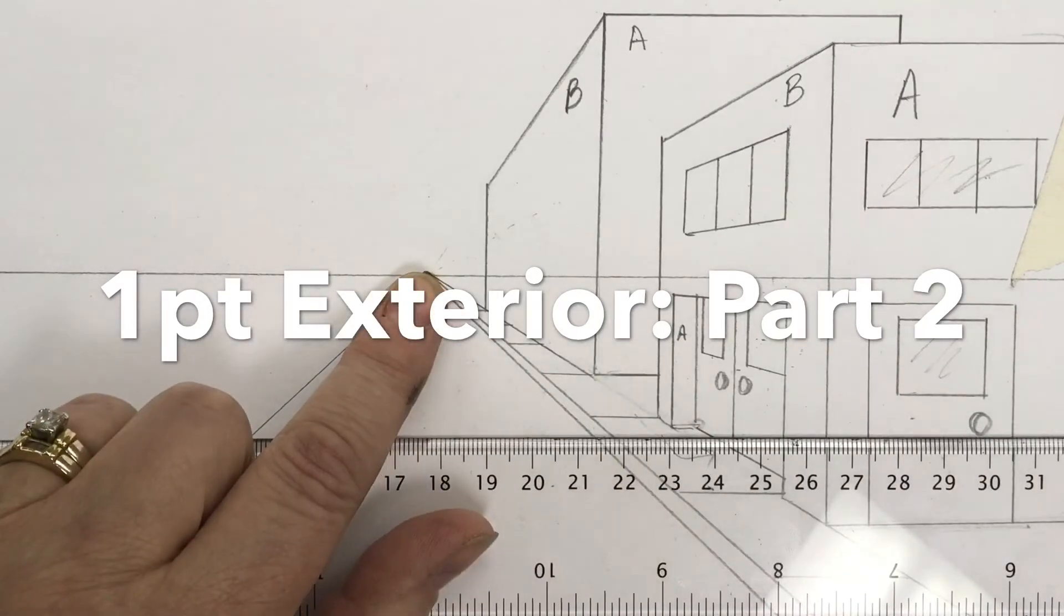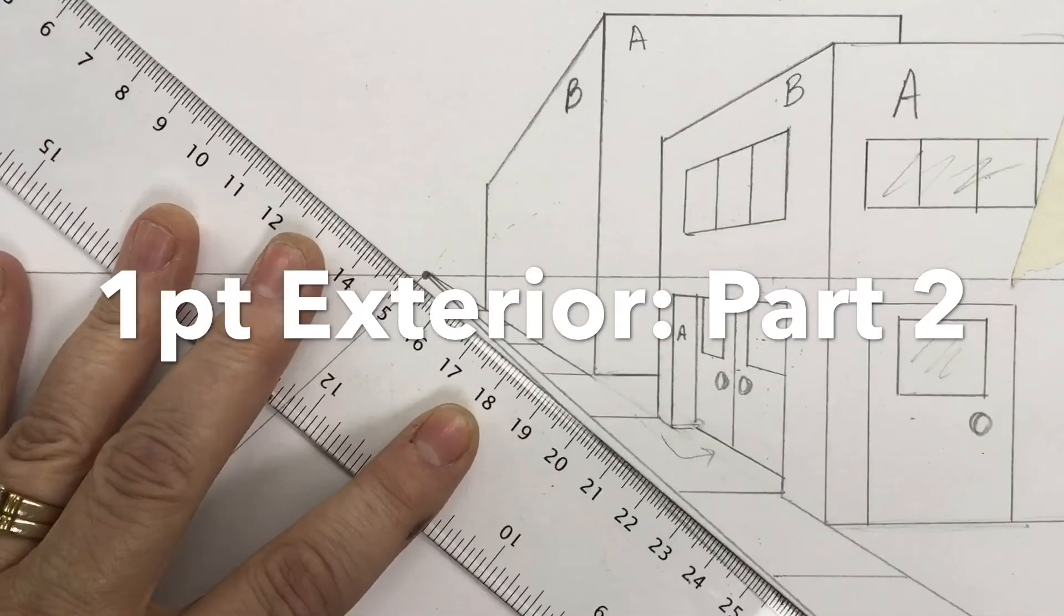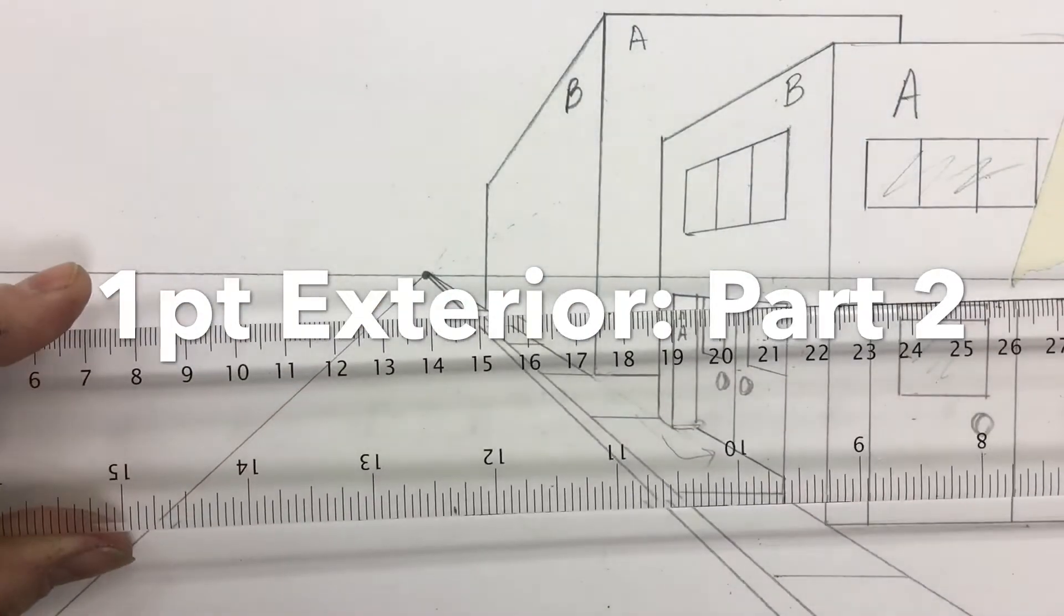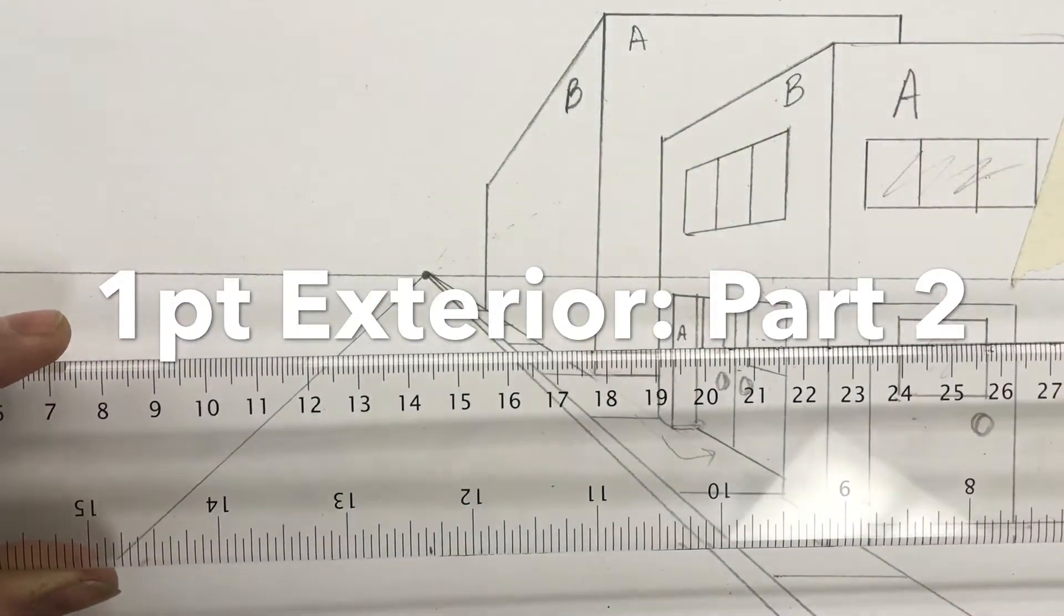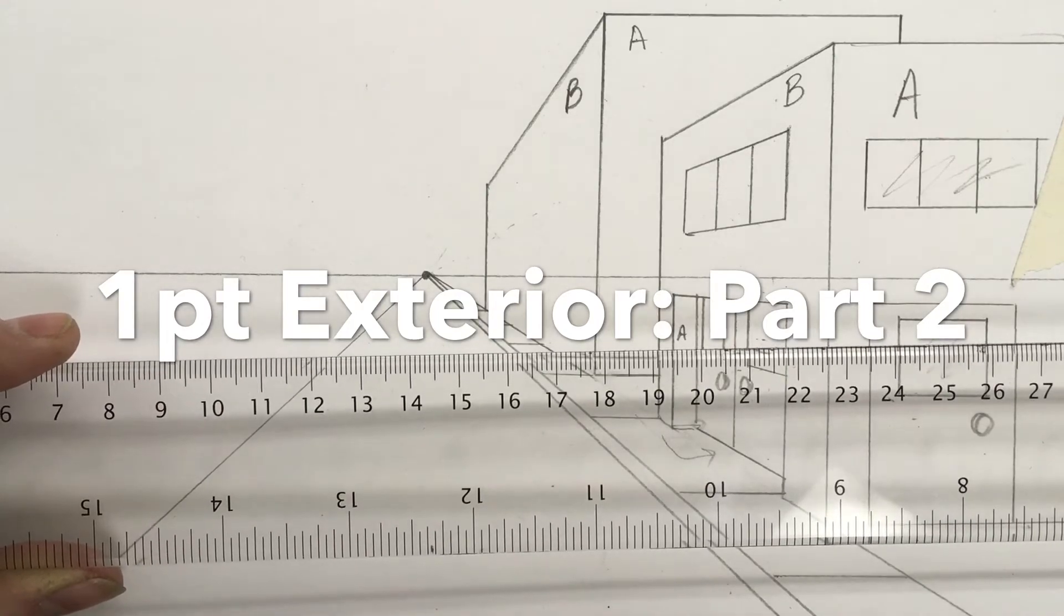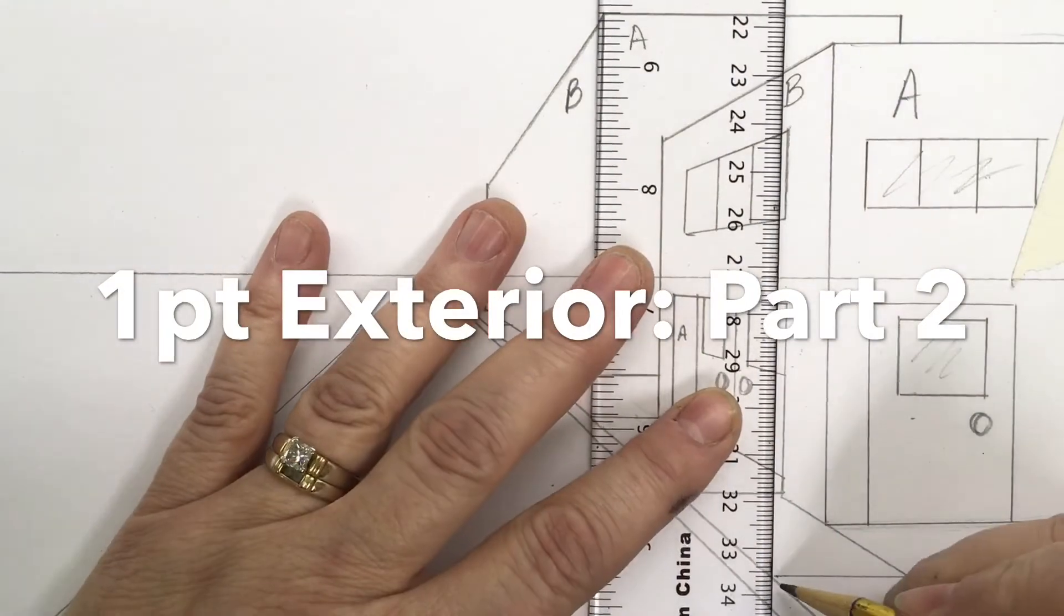All right, so see how these are horizontal, they are not leaning. Okay, the only diagonal you're allowed to have is one that goes to the vanishing point. So your ruler can either be diagonal to the point, vertical, or horizontal. There are no other positions you can have it in. It's like a multiple choice question.